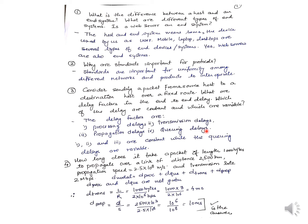Queuing delay comes into picture only when there are more packets waiting at the node. If there are three packets before your packet, you have to wait before those are processed. Which delays are constant and which are variable? Processing, transmission, and propagation delays are constant. Queuing delay is variable because you don't know how many packets will be at a node before yours — there could be none, or the buffer could be full.